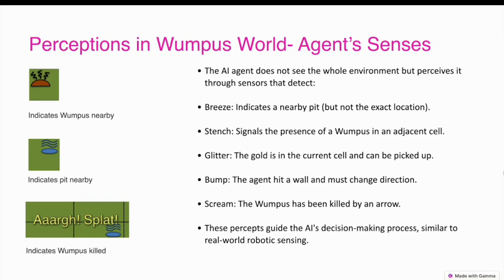Perceptions in Wumpus World — the agent's senses. The AI agent does not see the whole environment but perceives it through sensors that detect: Breeze, which indicates a nearby pit but not the exact location; Stench, which signals the presence of a Wumpus in an adjacent cell; Glitter, meaning the gold is in the current cell and can be picked up; Bump, meaning the agent hit a wall and must change direction; and Scream, meaning the Wumpus has been killed by an arrow. These percepts guide the AI's decision-making process, similar to real-world robotic sensing.